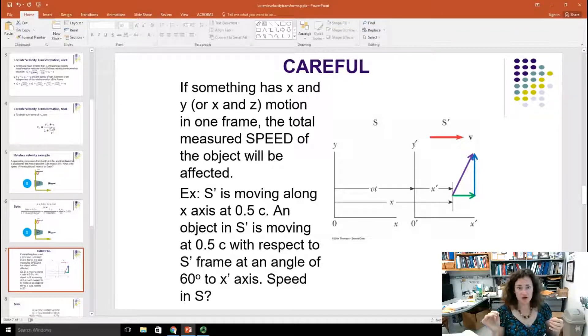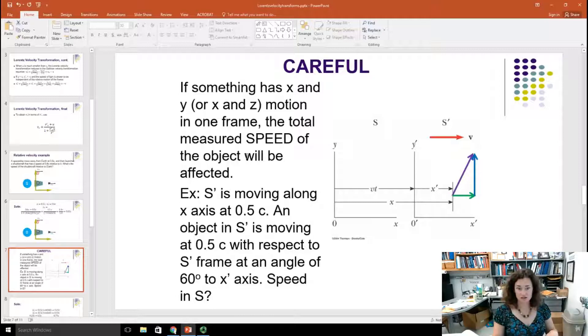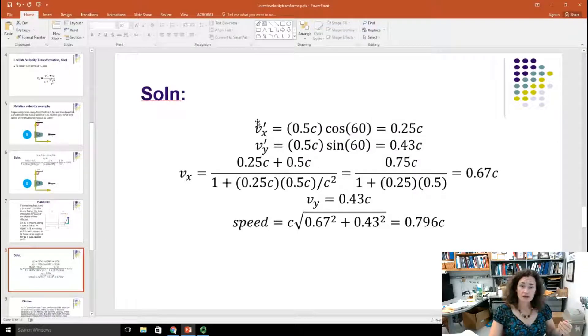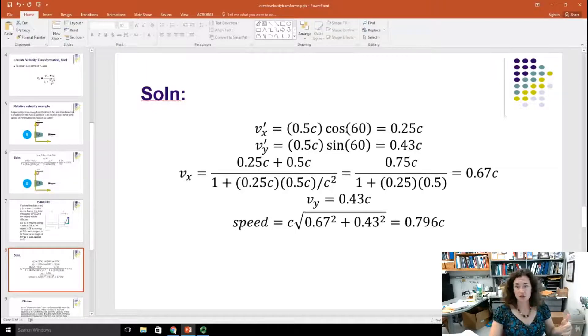Let's say that we have a frame S prime moving along the X axis at half the speed of light, and then you have an object within that frame moving at one half the speed of light with respect to it, but it's moving at an angle of 60 degrees with respect to the plus X axis. So what's its speed as measured in the stationary frame? You can see here I've got my red arrow showing the direction of my frame motion, and then the purple arrow shows the direction of the object within the frame moving at 0.5c.